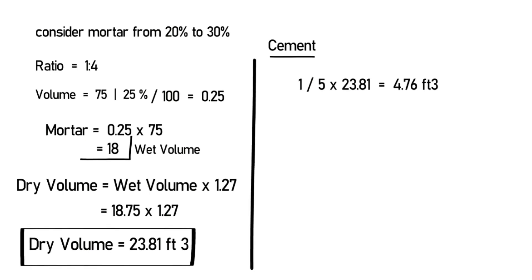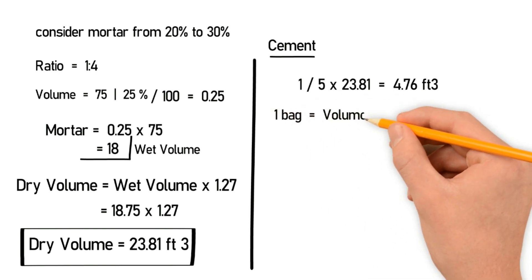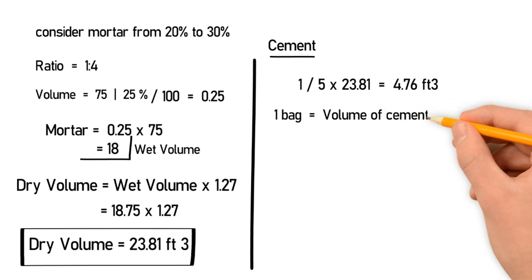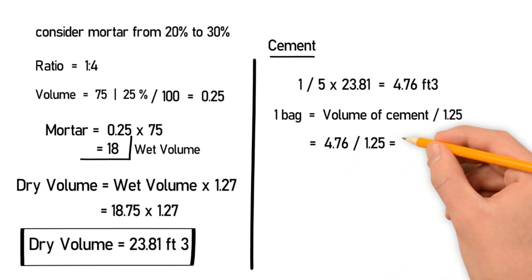To find out how much will be required for 1 bag, 1 bag is equal to 1.25. So volume of cement divided by 1.25, which will give you 3.80 cubic feet.